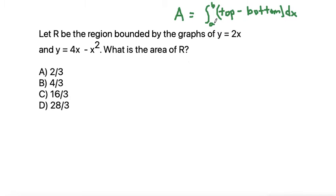So a is the left side of the beginning of the region and b is the right side of the end of the region. If we start this problem by sketching a little graph, it can be helpful because then you know which one is the top function and which one is the bottom function.